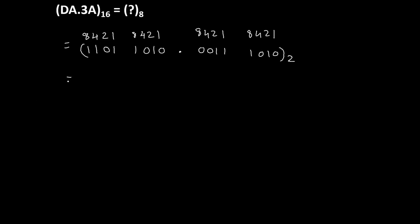Now our task is to convert this binary number into octal. For that, we will start making groups of 3 digits from the fractional point going left. First group is 0, 1, 0. Second group is 0, 1, 1. Third group is 1, 1 — and in order to make a complete group of 3 digits, we add one more 0. This added 0 has no significance.